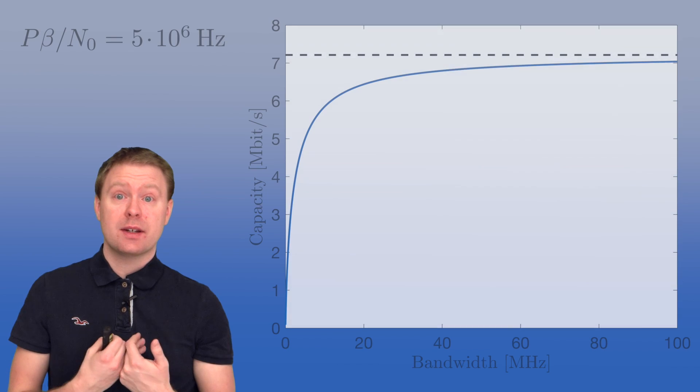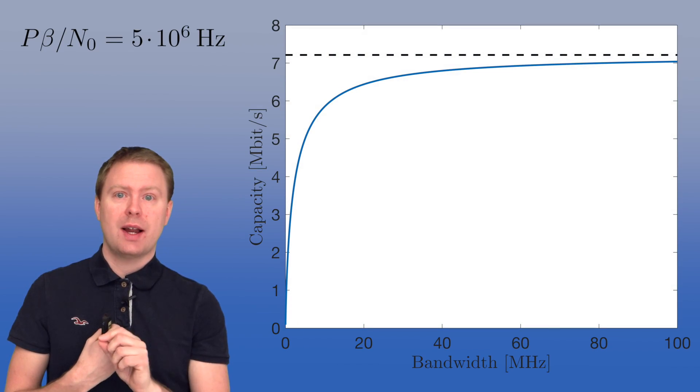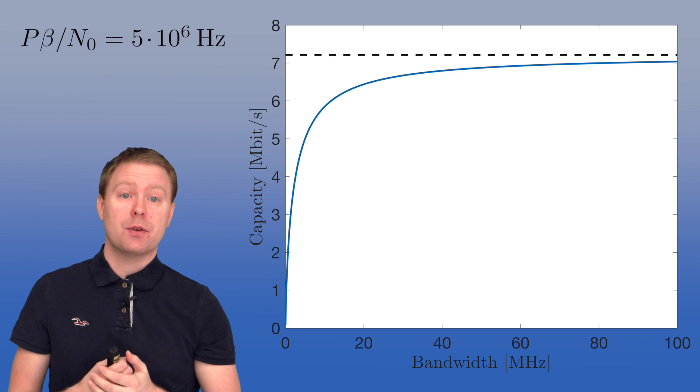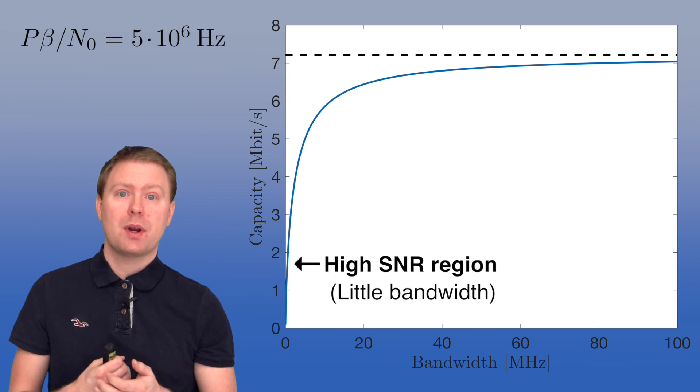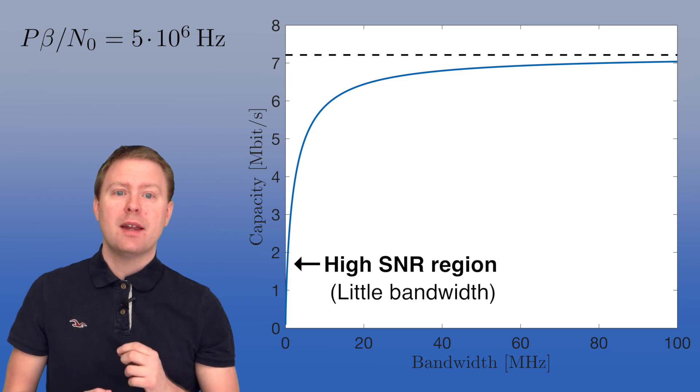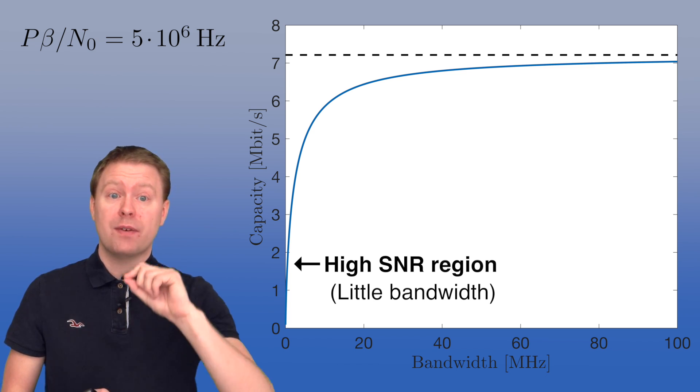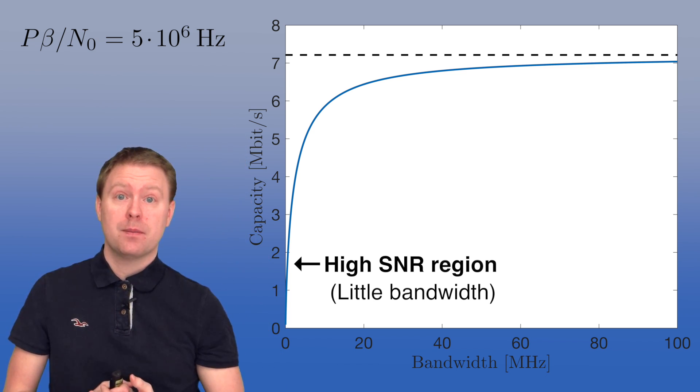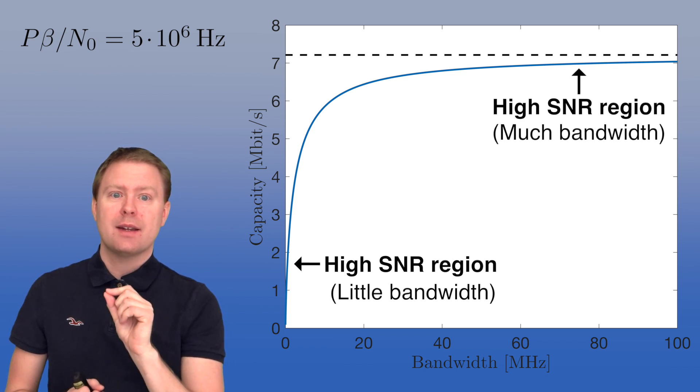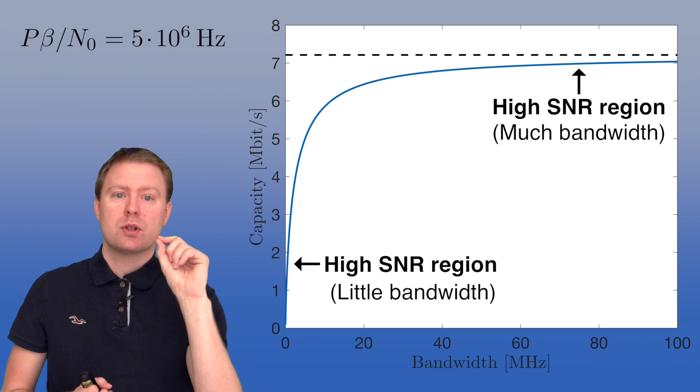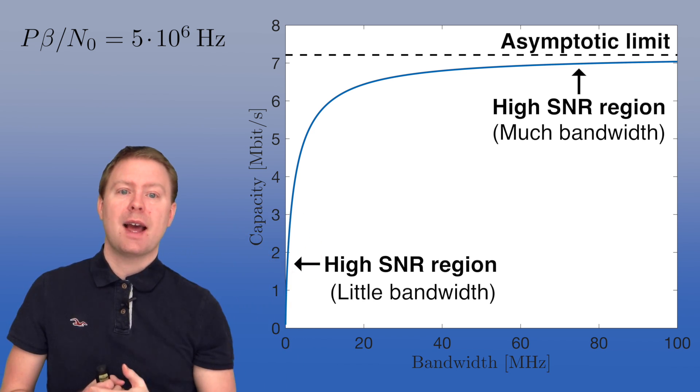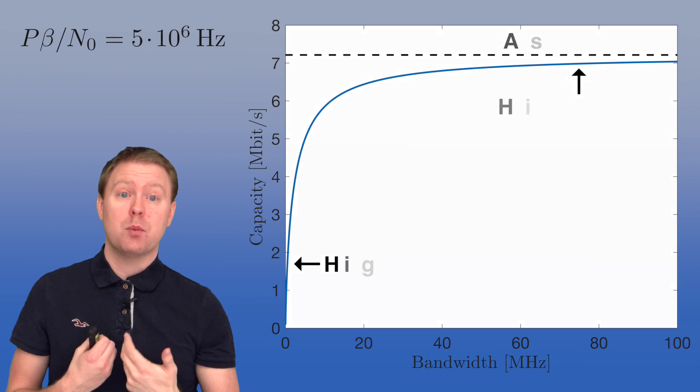That is illustrated in this graph here, where we now are changing the bandwidth on the horizontal axis and we have the channel capacity on the vertical one. We see that when we have a little bandwidth, so we are at high SNR, then the capacity is growing very, very quickly with the bandwidth. However, when we already have a lot of bandwidth, we see that the capacity grows slower and slower and approaches the asymptotic limit. In these cases it doesn't pay off much to add more bandwidth.